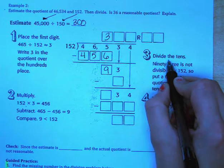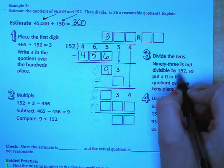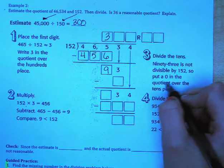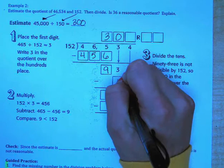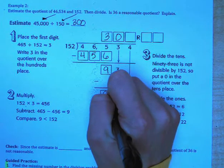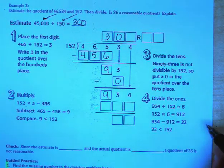Next we need to divide the tens place. 93 is not divisible by 152 so we're going to put a 0 in the quotient over the tens place. Which means we subtract 0, bring down 93, bring down our 4. So we have 934.